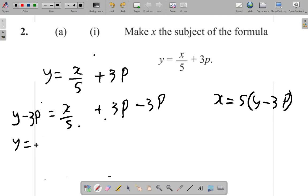So 3p minus 3p, there is no more 3p to worry about on the right. So I have y minus 3p equals x over 5.